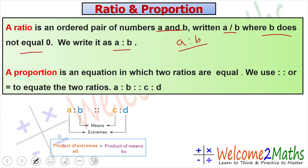What is proportion? Proportion is an equation in which two ratios are equal. We use the proportion sign or an equal sign to equate the two ratios — for example, a is to b as c is to d. Here, a, b, c, d are respectively known as the first, second, third, and fourth terms of the proportion.